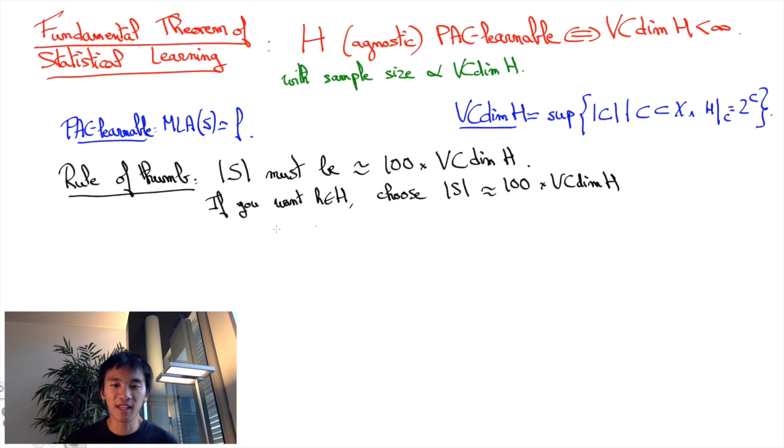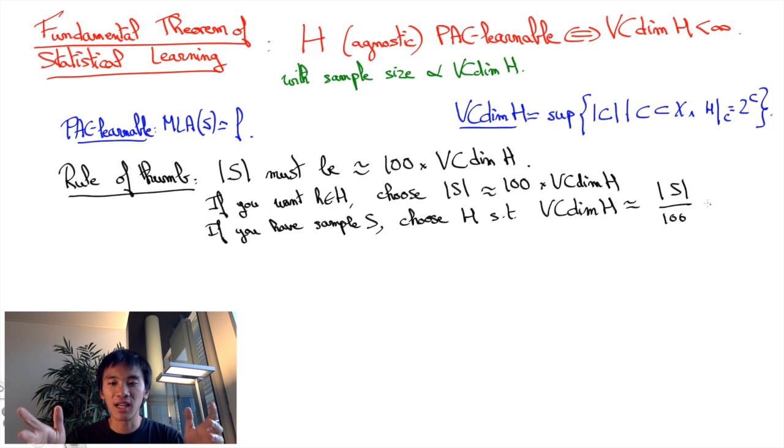This is in the case where you can choose how large a sample you can get. But perhaps more relevantly, the theorem also says that if you have a certain amount of data, the prediction function you'll learn probably should be drawn from a hypothesis class whose VC dimension is one-hundredth of the sample size.